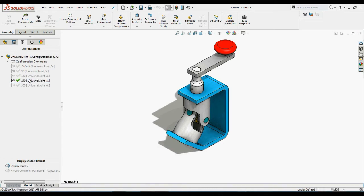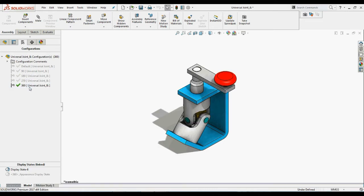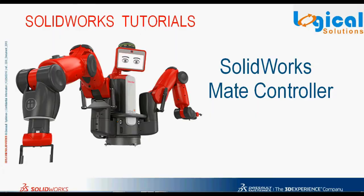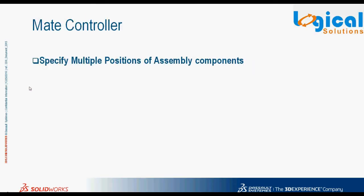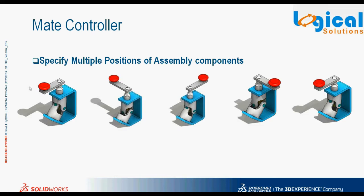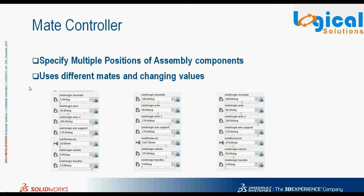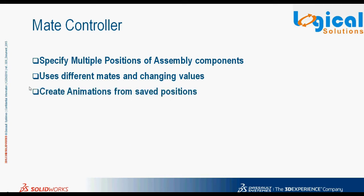With this easy process, we can represent the different positions of components in an assembly, but these are time consuming. SOLIDWORKS has introduced the Mate Controller feature in 2016. With it, we can specify multiple positions of our assembly components using different mates and changing respective mate values without actually having to create configurations for positions or even animations.